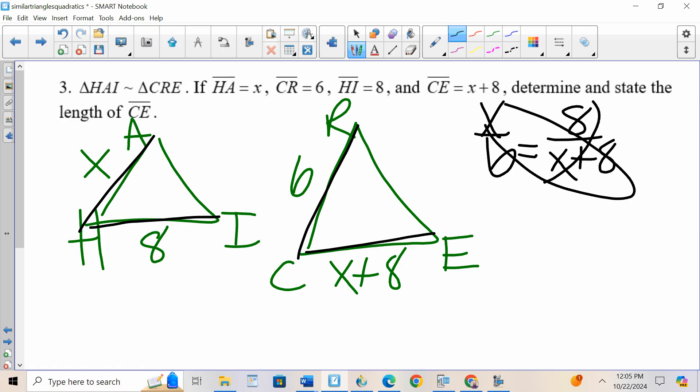I cross multiply and solve. X times X plus 8, I'm going to write for now as X times X plus 8, 8 times 6 is 48. I distribute, X squared plus 8X equals 48.